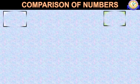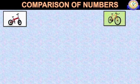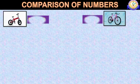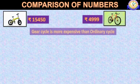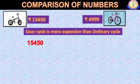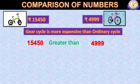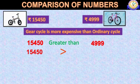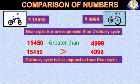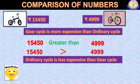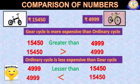I think most of you have a cycle. Some of you may own an ordinary cycle whereas some of you might have a gear cycle. Can you tell me which cycle is more expensive? Of course, the gear cycle. Therefore, 15,450 is greater than 4,999. This relation can be symbolically written as 15,450 is greater than 4,999. Then which cycle is less expensive? The ordinary cycle is less expensive. Therefore, 4,999 is lesser than 15,450.